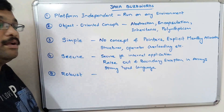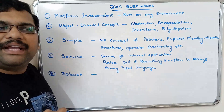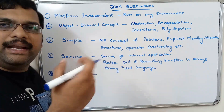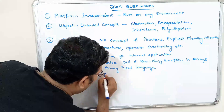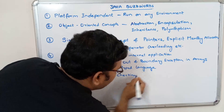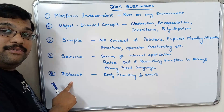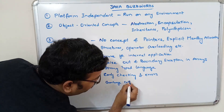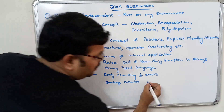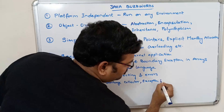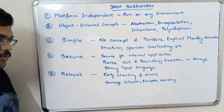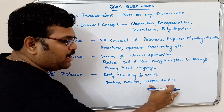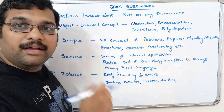Next is robust, which means early identification and checking of errors. At the time of compilation itself, we get some errors and rectify them — that is early checking of errors. This can be achieved with the help of a garbage collector and exception handling. By using the garbage collector and exception handling, we can identify errors. Whenever an error occurs, if you implement exception handling, the exception will be raised.